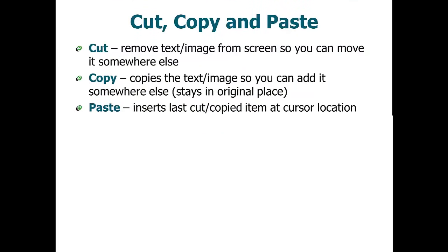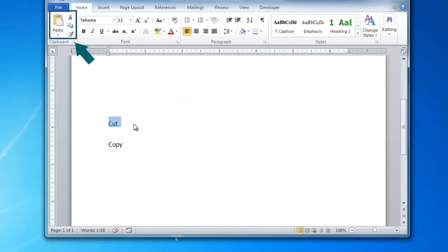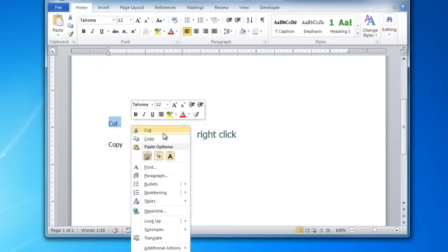Now that you can select text, let's talk about one of the most common functions needed when using your computer — using the cut, copy and paste feature to move content from one area to another. The cut feature removes text or images from your screen so you can move it elsewhere. The copy feature copies text or images so you can add it somewhere else while also maintaining it in its original location. To place cut or copied text, use the paste function once you've placed your cursor in the right location. To use cut, copy and paste, you first need to select the text or image. In some programs, you can access menu items for cut, copy and paste, such as in Microsoft Word. But in most cases, you can access them through right clicking to access a context specific menu.